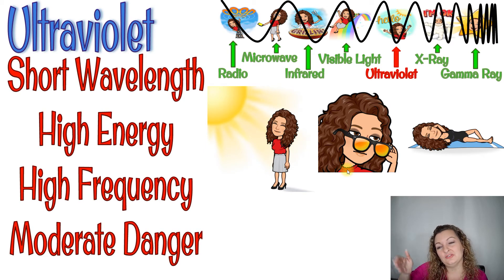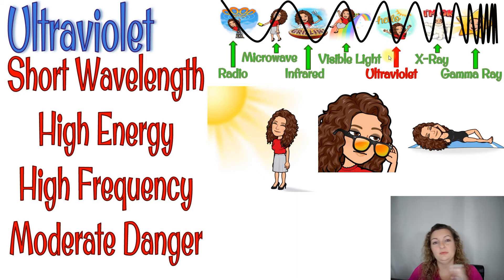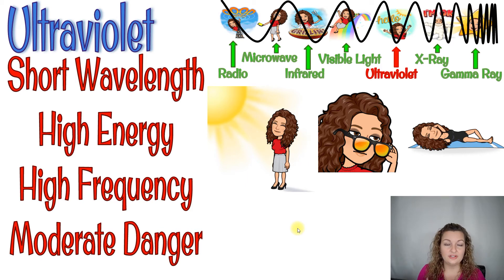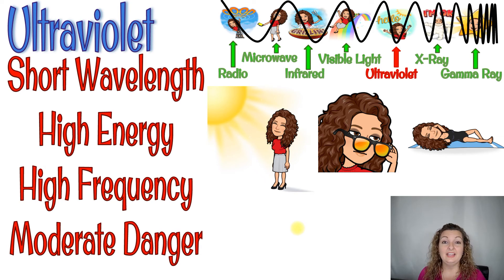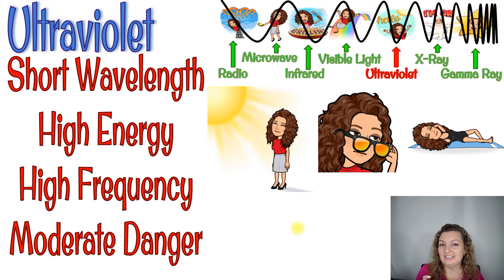Next up, we're going slightly further into ultraviolet. Ultraviolet is really where we cross the line — we cross the midpoint. Now we're getting into shorter wavelengths, higher energy, higher frequency, and we're finally at a moderate danger zone. That's because ultraviolet light comes from our sun and shines down on us. It gives us vitamin D, which is good for our skin and body, but if we absorb too much it can give us a sunburn, and eventually that can lead to things like skin cancer. So it is moderately dangerous, but not too bad.